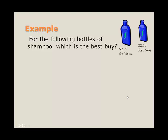In this example, we're looking at which bottle of shampoo is the best buy. We have a 20-ounce shampoo for $2.97, and a 16-ounce for $2.59. So what we are interested in is finding the unit price. So the unit price is going to be the total price, the dollar amount, divided by the number of units, in this case, 20 or 16 ounces.